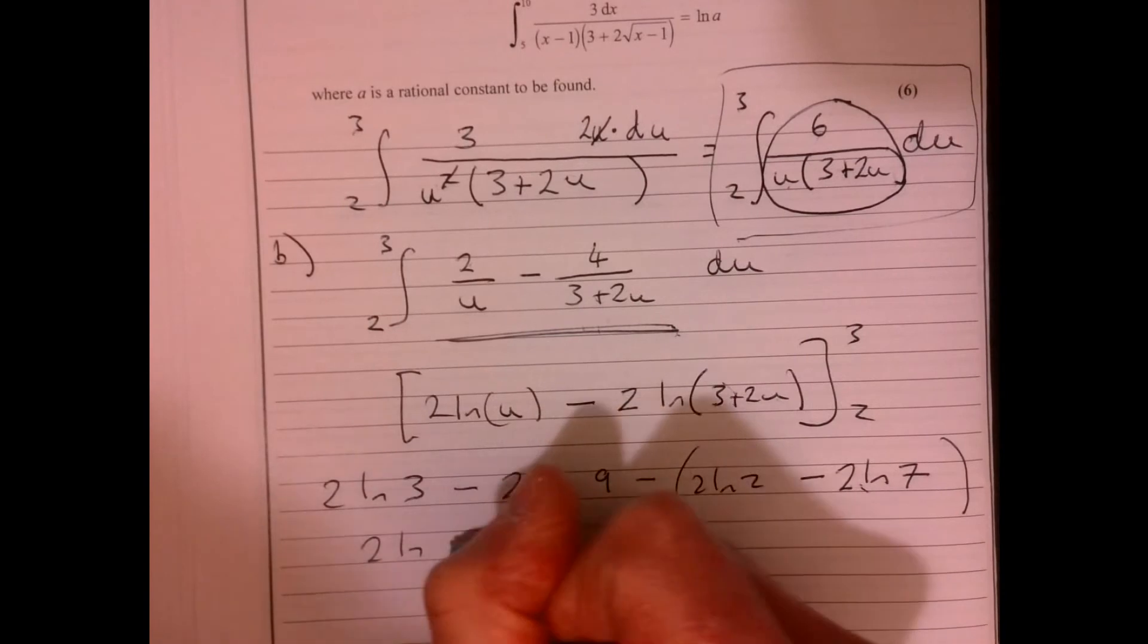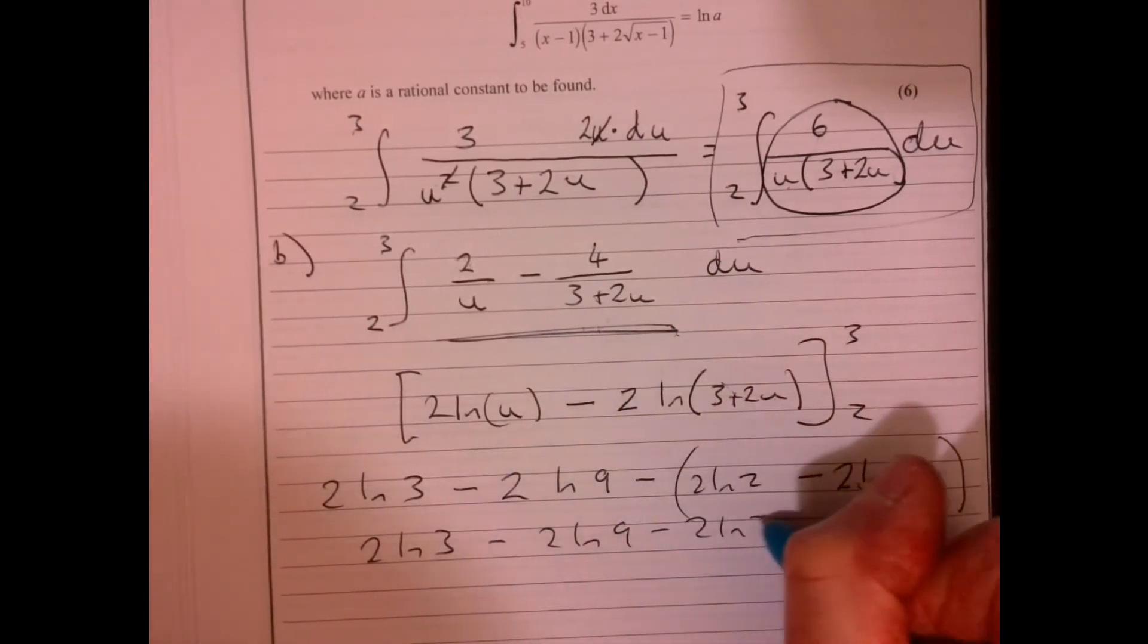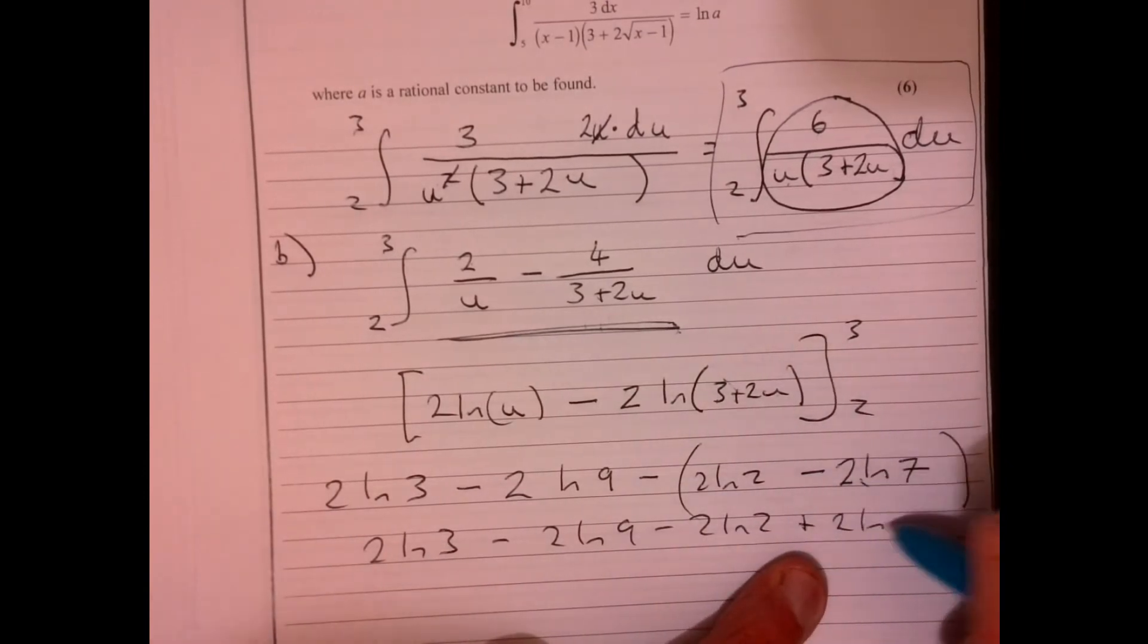If I put two into here, it's going to be seven. So then when I look at this, about in the bracket there, two ln nine, take away two ln two. And then that becomes a plus. So two ln seven.